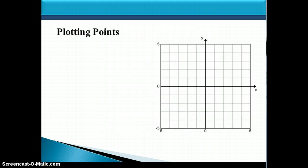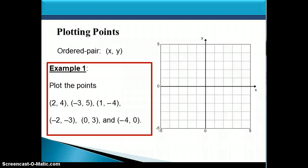So let's use that information to plot some points. Remember that each point can be labeled or named with an ordered pair, where the first number is always the x-coordinate and the second number is always the y-coordinate. The first point is (2, 4). The x-coordinate tells you how far to go right or left, always starting at the origin. A positive 2 tells us to go right 2 units. The y-coordinate tells you how far to go up or down. Since it's a positive 4, we go up 4 units. So right 2 and up 4 gets us to the point (2, 4).